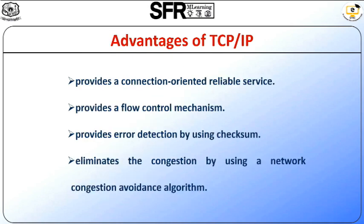Next we will see the advantages of TCP/IP. It provides a connection-oriented reliable service, which means it guarantees the delivery of data packets. If a data packet is lost across the network, TCP will resend the lost packet. It also provides a flow control mechanism using a sliding window protocol, and provides error detection using checksum and error control using the Go-Back-N or ARQ protocol. It eliminates congestion using a network congestion avoidance algorithm that includes schemes such as additive increase or multiplicative decrease, slow start, and congestion window.